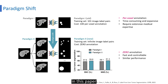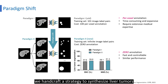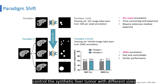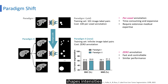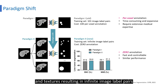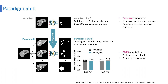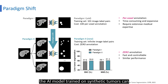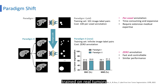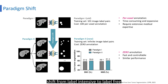In this paper, we have crafted a strategy to synthesize liver tumors. Our method requires zero annotation, and we can control the synthetic liver tumor with different sizes, shapes, intensities, and textures, resulting in infinite image-label pairs. The AI model trained on synthetic tumors can segment liver tumors as accurately as AI trained on real tumors, showing the potential of a paradigm shift from label-intensive to label-free liver tumor segmentation.